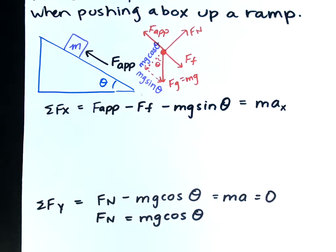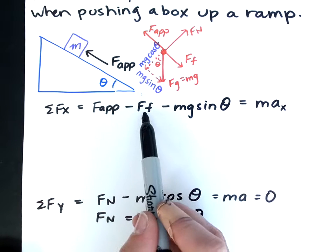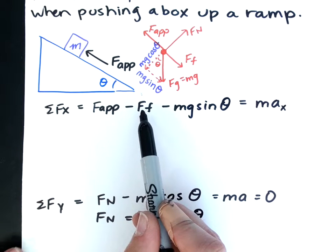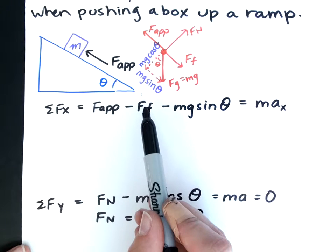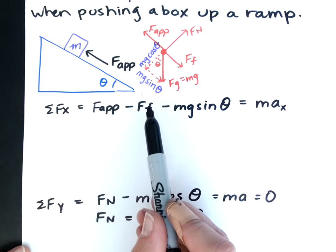Okay, so now we can substitute. We know the force of friction. What's our equation for force of friction? Mu times what? Fn. Fn. So here's Fn. So let's just substitute.